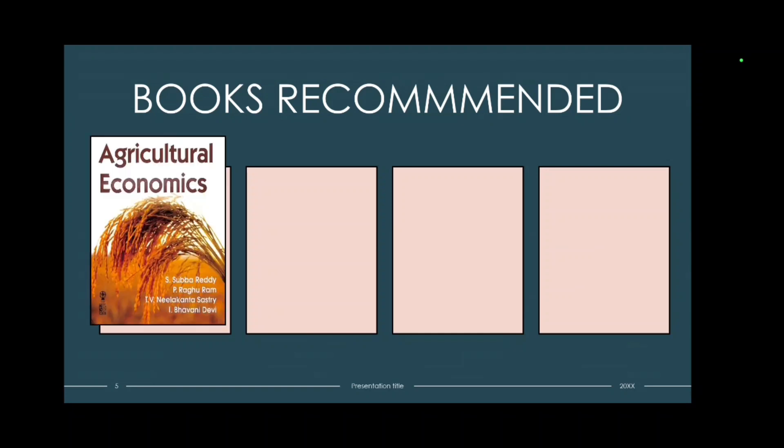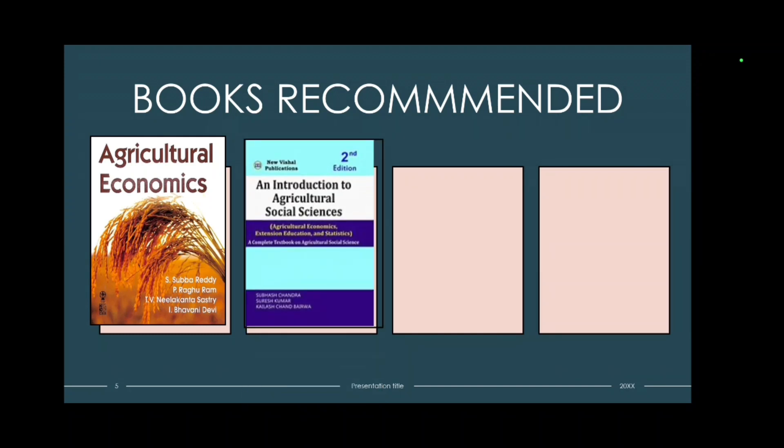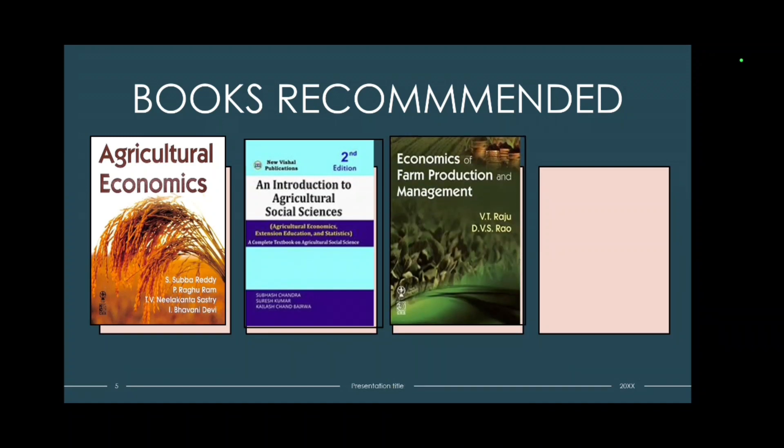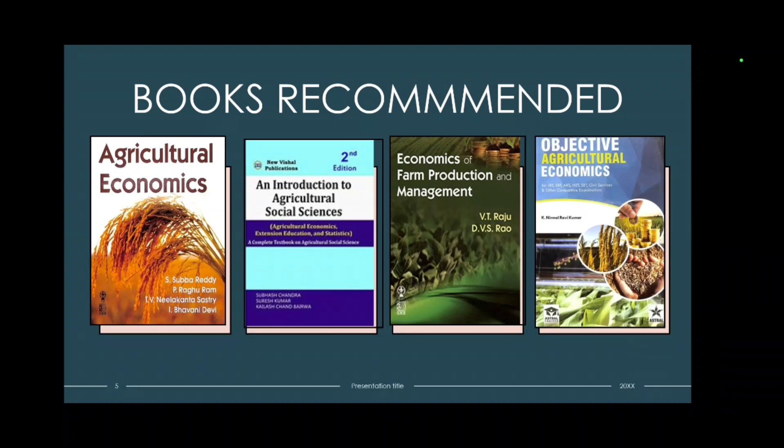Now these are the book recommendations. First it's Subharedi that is agriculture economics by Subharedi. This is the most basic and most important book. Then an introduction to agricultural social sciences by Subharedi Chandra. Then you can refer to economics of farm production and management by VD Raju. Especially this is for only production economics and farm management. Then the last book is objective agriculture economics by Nirmal Ravi Kumar. This is also known by NRK. This is an objective book and you must practice questions by economics to clear your concept.